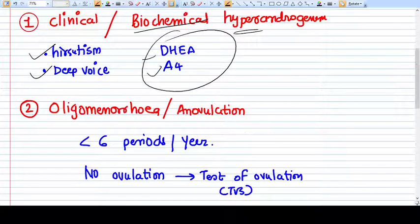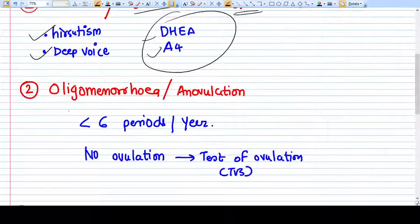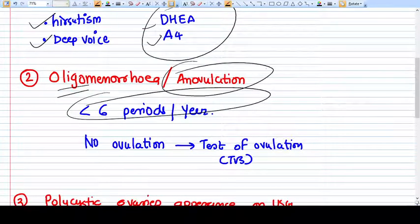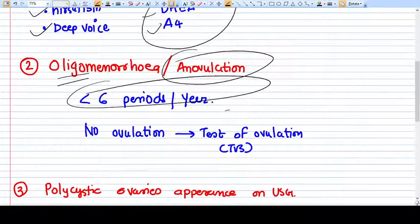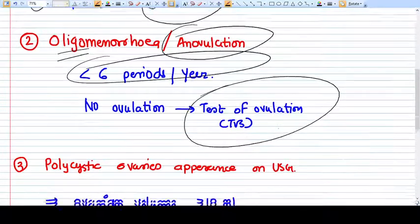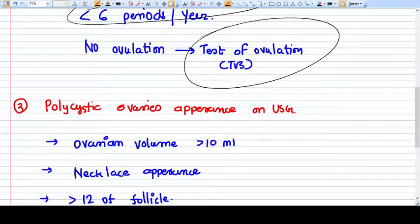Second is oligomenorrhea and anovulation. Oligomenorrhea is defined as less than six periods per year, and the signs of anovulation can be detected by various tests of ovulation available. I have a video you can go for that.